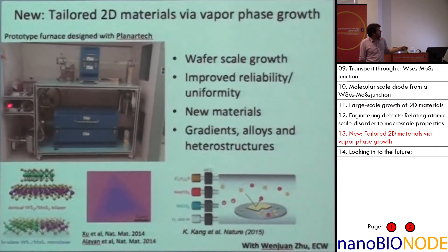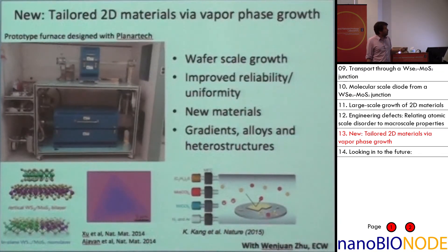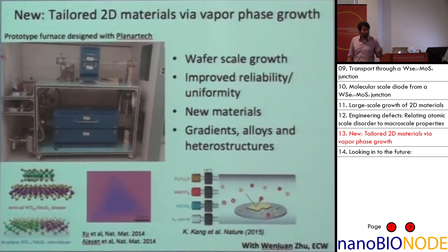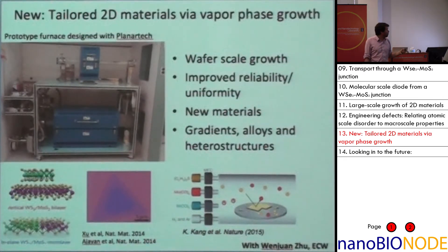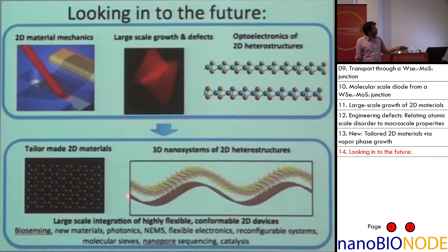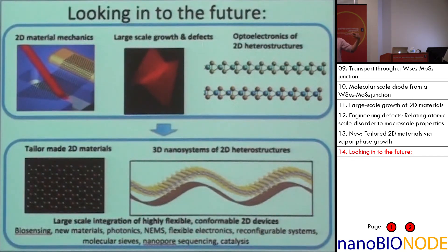We're taking the next step: not just growing one or two materials, but developing a vapor phase method for growing 2D materials. We've just installed a new furnace that uses techniques from metal-organic synthesis and vapor phase synthesis. We're hoping this gives us vast improvements in scalability and reliability of 2D materials, but also the ability to grow new materials, gradients, alloys, and heterostructures. Once we have these new materials, we can take our experience with mechanics on graphene, as well as optoelectronic devices with heterostructures, and integrate those ideas — thinking about what kinds of new 3D nano systems we can make when we combine mechanics and heterostructures together.